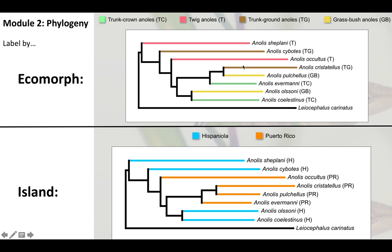Instead, when we group things by island, we see patterns that make sense. All closely related species in one bunch are from Puerto Rico; all closely related species in another are from Hispaniola. A cluster might have three different ecomorphs, but they all live on the same island — that's not coincidence. When this lineage split, one species stayed on Hispaniola and one migrated to Puerto Rico. So lizards on the same island are going to be more closely related to each other regardless of their ecomorph.